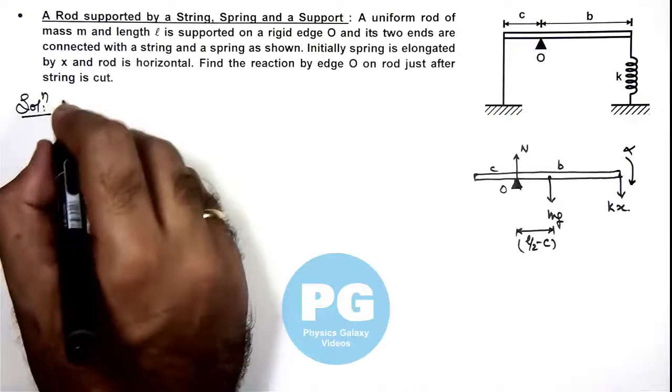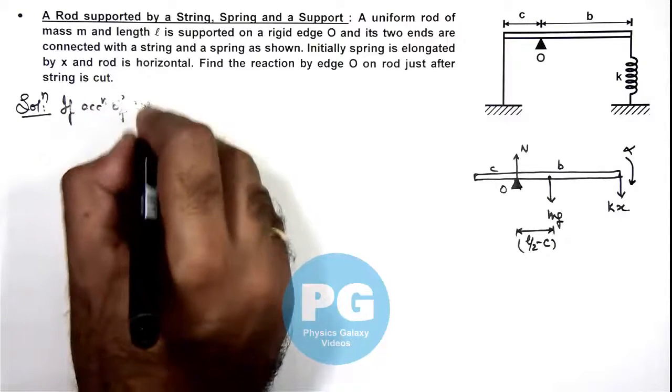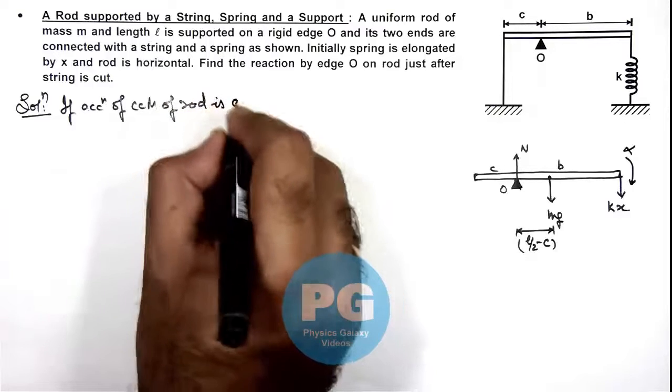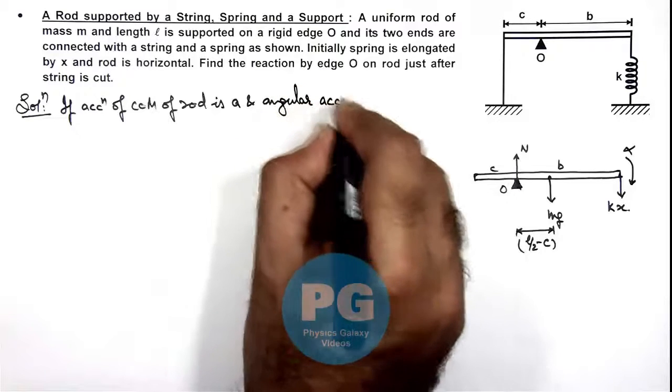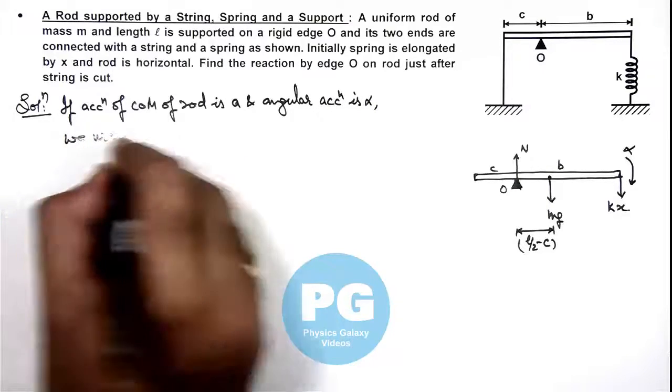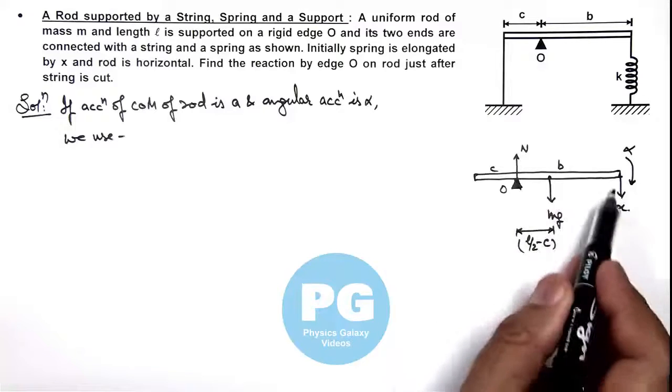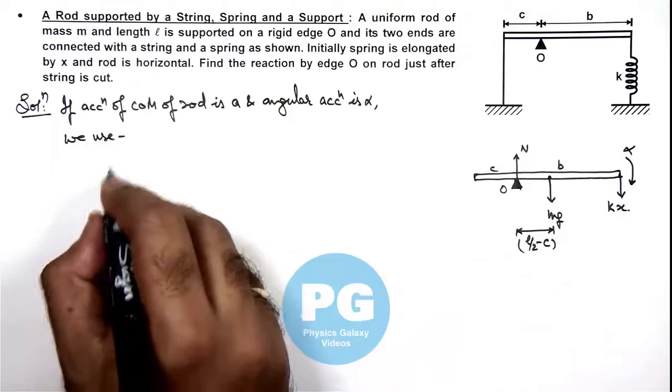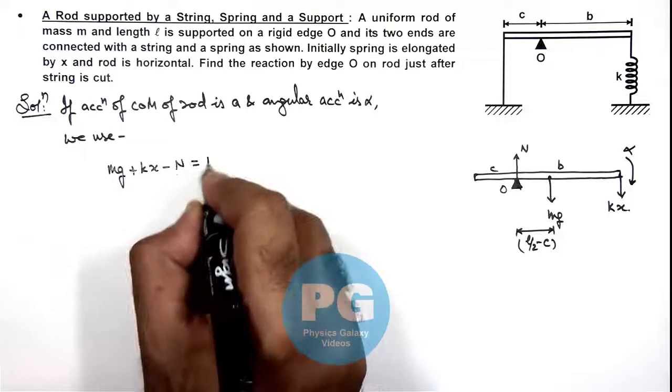So here we can write, if acceleration of center of mass of rod is ay and angular acceleration is alpha, here we use, in this situation we can write the downward force acting on it is mg plus kx and opposite is N. So here we can write mg plus kx minus N is equal to m ay.